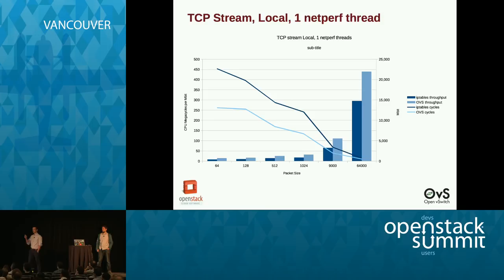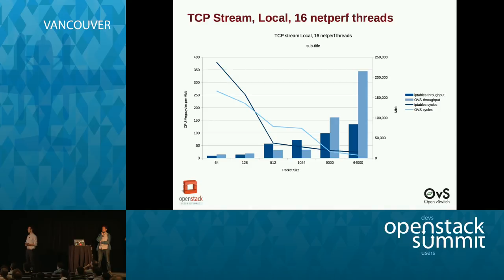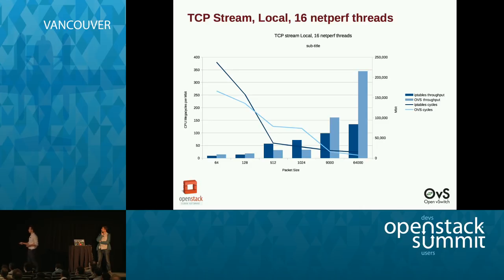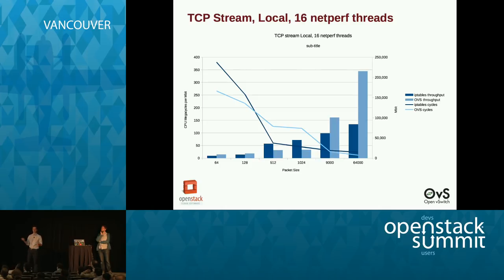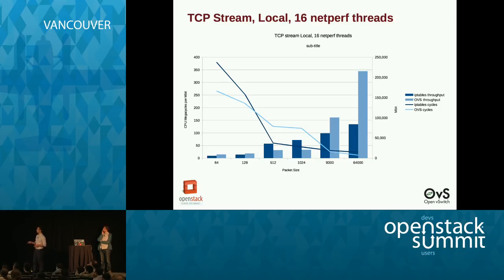This is for a single netperf thread — one core sending packets. With 60 netperf threads sending locally, OVS is doing extremely better for large packets. We're also seeing something we're still investigating: for certain packet sizes, the OVS solution is doing worse. We noticed that on a different system we didn't see this glitch. This is definitely something we need to look into before we can get this merged, and it's the only occasion we found where OVS was not doing better.